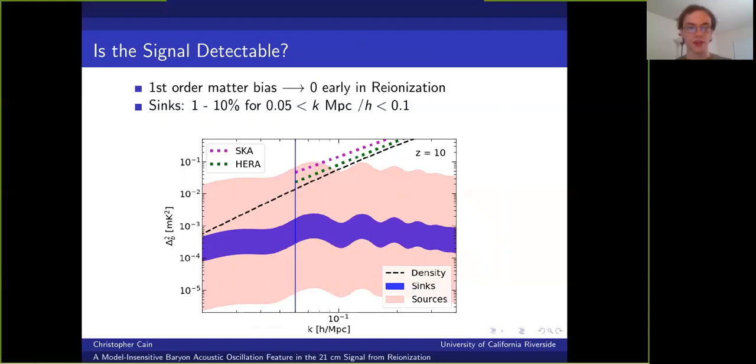So I've shown here the components of the 21 centimeter brightness temperature fluctuation power spectrum in a realistic version of this scenario. The black dashed curve is the second order matter term that is the dominant term at this time. While the blue and pink shaded regions show the range of possible contributions from the sink and source terms, respectively, based on our results. And we find here that for realistic reionization histories, the sinks term is constrained to contribute one to 10 percent of the signal for wave numbers between 0.05 and 0.1 h over megaparsecs.